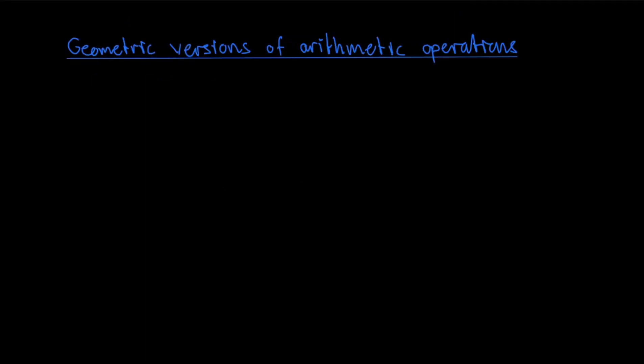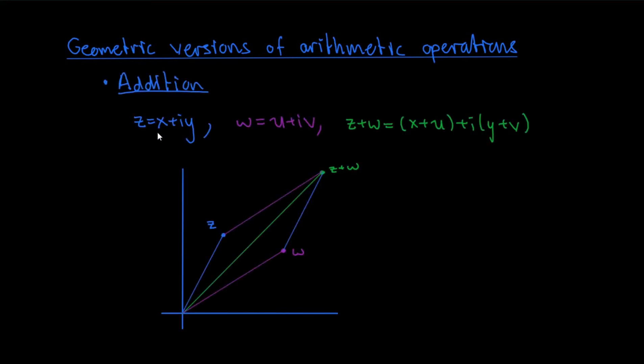Finally, I want to talk about geometric versions of the arithmetic operations. So what happens geometrically in the complex plane when you add or multiply two complex numbers together? Well, first of all, when you add two complex numbers, z equals x plus i y, and w equals u plus i v, the complex number that you get following the law of addition is the diagonal of the parallelogram determined by the position vectors of z and w. In other words, geometrically, what you get when you add two complex numbers is determined by the parallelogram law for vector addition in Euclidean space.